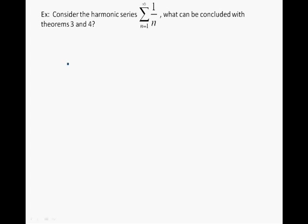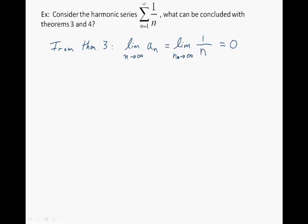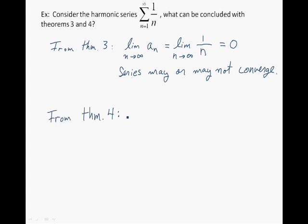Let's look at what Theorem 3 can tell us. We find the limit of the n-th term a_n as n approaches infinity: the limit of 1/n as n approaches infinity equals 0. But Theorem 3 does not guarantee that the series converges, so all we can say is that the series may or may not converge. Turning to the test for divergence: it says if the limit does not exist or is not equal to 0, then the series diverges. But here the limit equals 0, so the test for divergence does not confirm divergence either. All we can say is that the series may or may not converge.